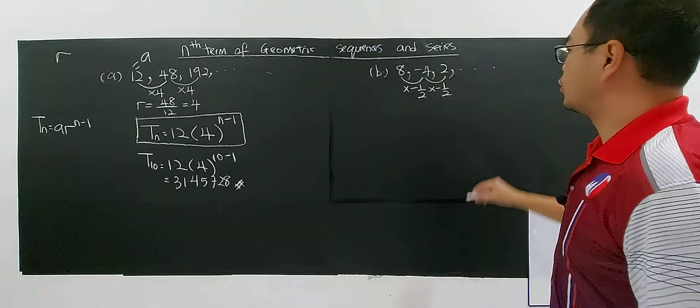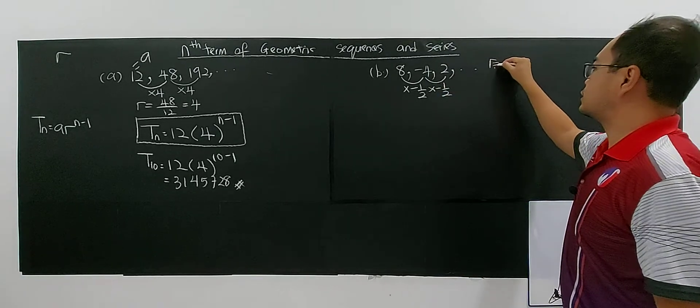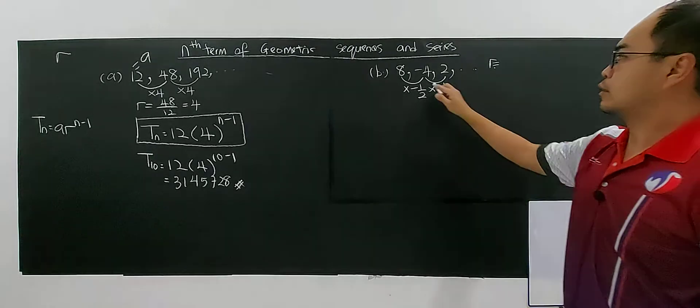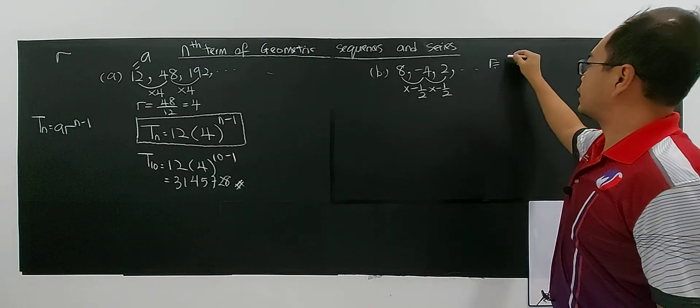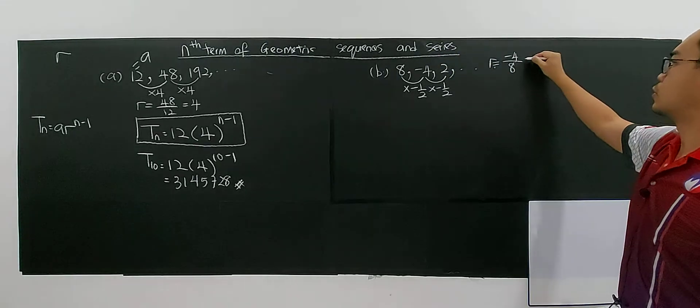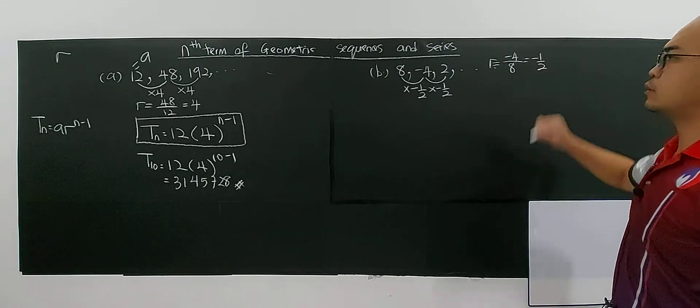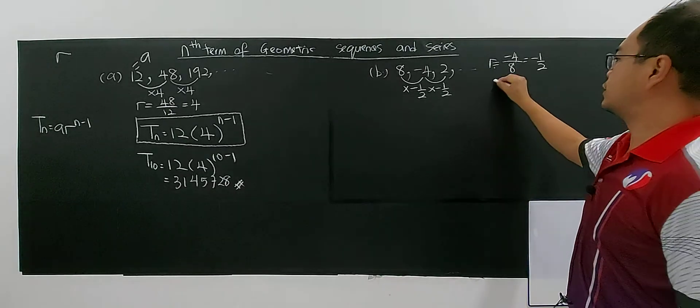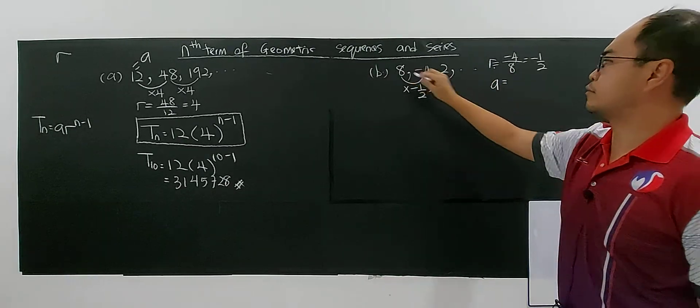And if you multiply negative 1 over 2 again, you will get negative 2. You have positive 2. So clearly your R is negative 1 over 2. Or you can take negative 4 divided by 8, or 2 divided by negative 4. You will still get negative 1 over 2. And your first term for this case is 8.